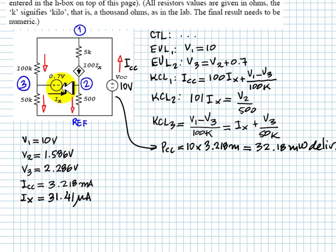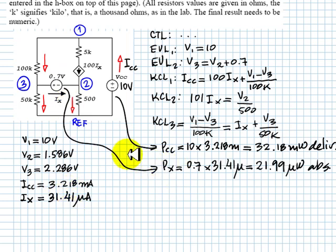That current Ix actually is a positive current. So, indeed, that source is absorbing power at a rate of 0.7 times 31 microamps. So, the power in that source, 0.7 times that, is 21.99 microwatts, 22 microwatts absorbed. Do not forget to write that it's absorbed power.